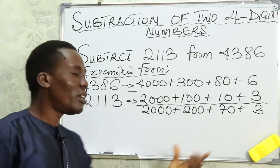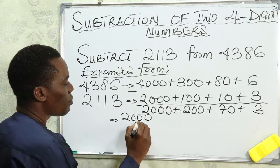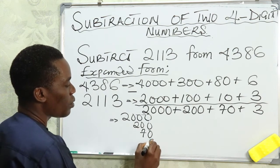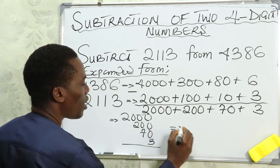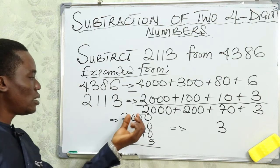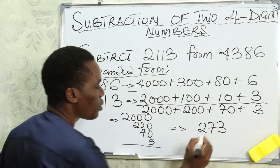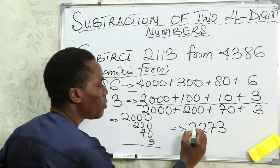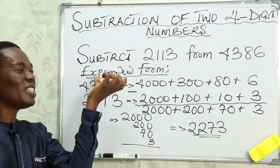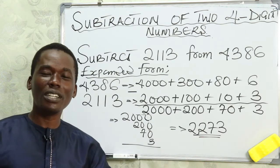Now our job is to add these results together. We have 2000, plus 200, plus 70, plus 3. Adding: 0+0+0+3 gives 3 in the units; 0+0+7 gives 7 in the tens; 0+2 gives 2 in the hundreds; and 2 gives 2 in the thousands. So subtracting using the expanded form gives us 2273.